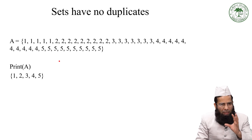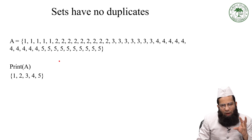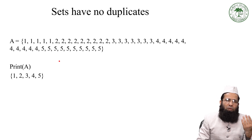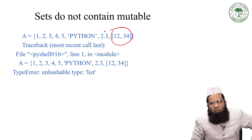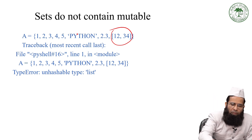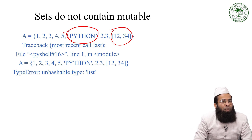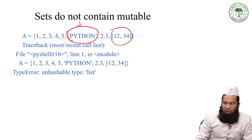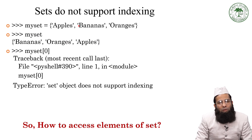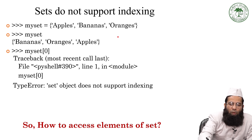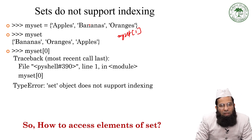Sets have no duplicates — if you enter duplicate values, only unique values will be stored and printed. Sets do not contain mutable elements. Python allows you to store a string in a set because a string is immutable. Sets do not support indexing, so you cannot access an individual element using the index operator — for example, you cannot use set[1] to access the first element.